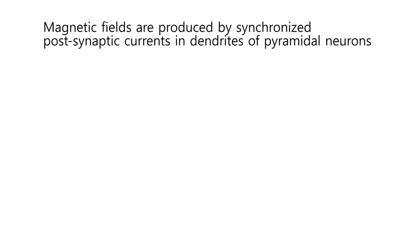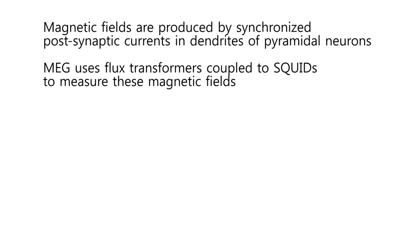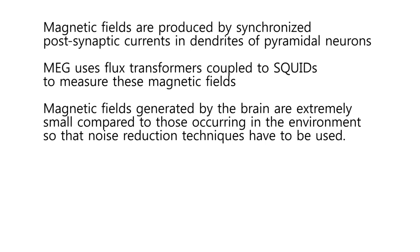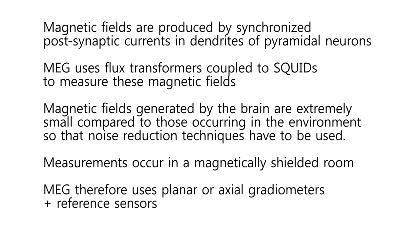This concludes our presentation of the basic principles of MEG recording. To summarize, with MEG we record magnetic fields that are produced by synchronized postsynaptic currents in the dendrites of pyramidal neurons. Magnetic fields are measured using flux transformers coupled to squids, both of which have to be at superconducting temperatures. This is achieved by using a dewar filled with liquid helium. MEG is very sensitive to environmental noise, and it therefore has to use noise reduction techniques. For this purpose, recordings are done in a magnetically shielded room. Furthermore, MEG uses gradiometers and reference sensors instead of plain magnetometers. Several hundreds of these are typically used to get a whole head coverage, and they are recorded at about 1000 Hz.